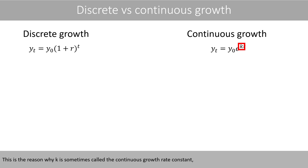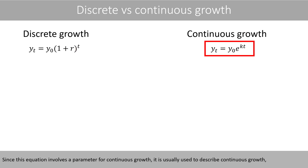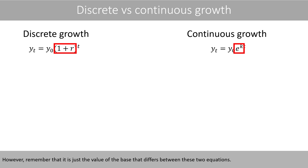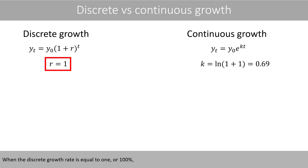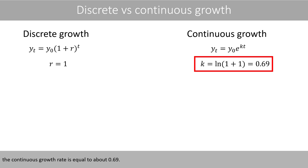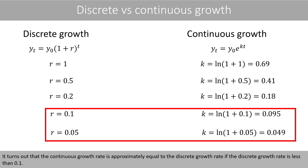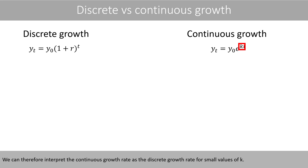This is the reason why K is sometimes called the continuous growth rate constant, whereas R is sometimes called the discrete growth rate constant. Since the equation with E involves a parameter for continuous growth, it is usually used to describe continuous growth, and the equation with A involves a parameter for discrete growth. Remember that it is just the value of the base that differs between these two equations — the main difference is just the interpretation of the parameters. When the discrete growth rate is equal to 1 or 100%, the continuous growth rate is equal to about 0.69, and when the discrete growth rate is 0.5, the continuous growth rate is equal to about 0.41. It turns out that the continuous growth rate is approximately equal to the discrete growth rate if the discrete growth rate is less than 0.1.